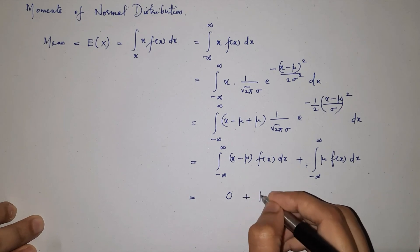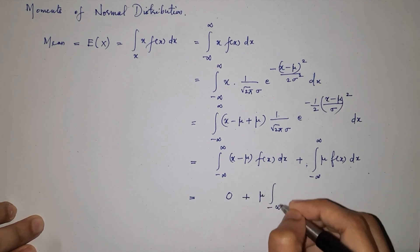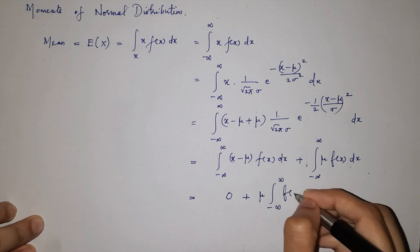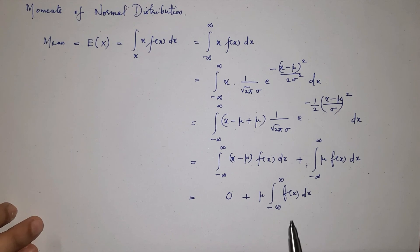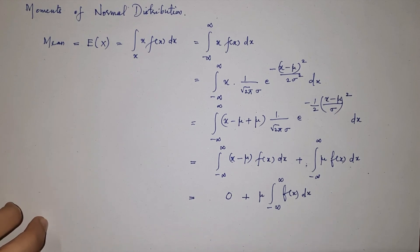Plus mu into integral minus infinity to infinity f of x dx. We know integrating a pdf in its full range will give us 1.